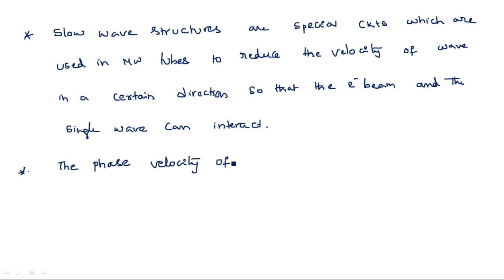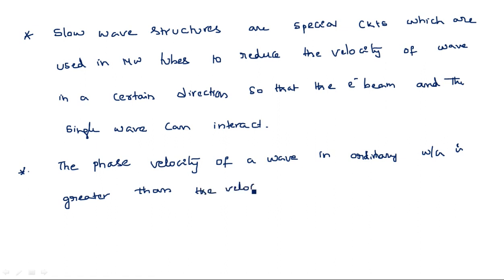The phase velocity of a wave in an ordinary waveguide is greater than the velocity of light in vacuum. So in normal waveguides, when a wave is propagating, the phase velocity of that wave is very high compared to the velocity of light in vacuum.